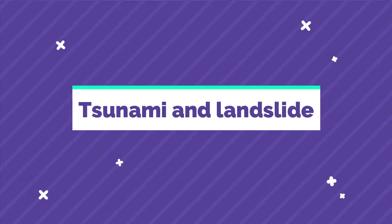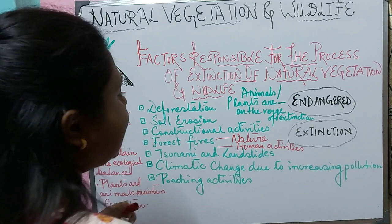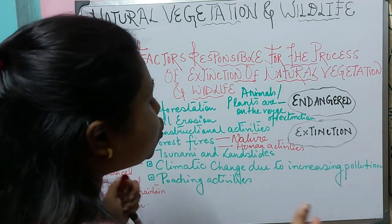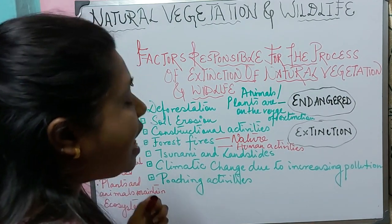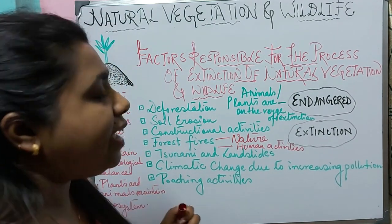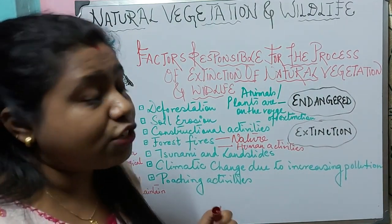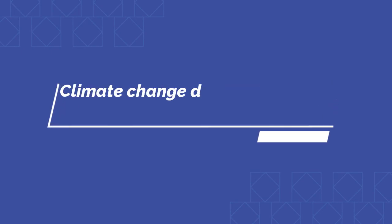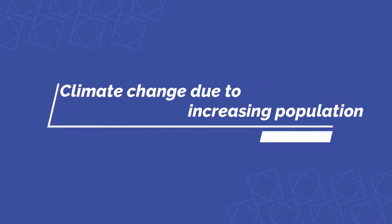The next factor is tsunami and landslide. Due to tsunamis and landslides, a huge number of animals and wildlife get destroyed.